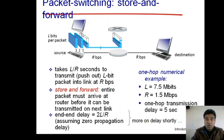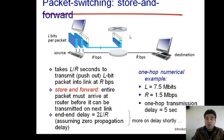In this network, the source is trying to send three packets to the destination. The first packet is transmitted over the first link and takes L/R seconds — where L is the number of bits in the packet and R is the transmission rate — to reach the intermediate router. So the first packet takes L/R seconds to reach that router.